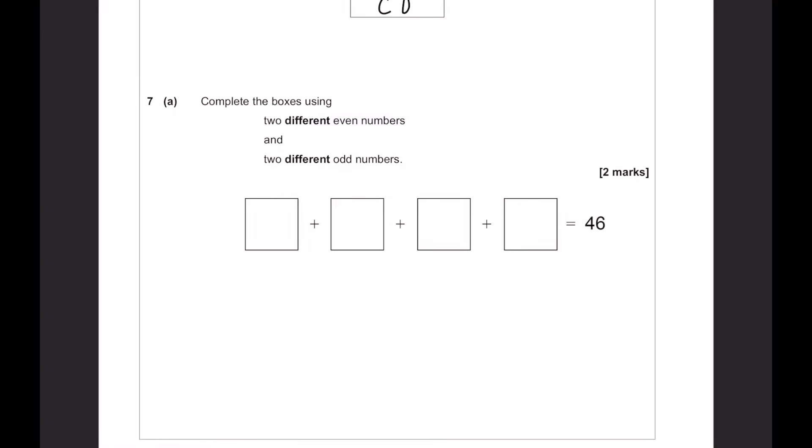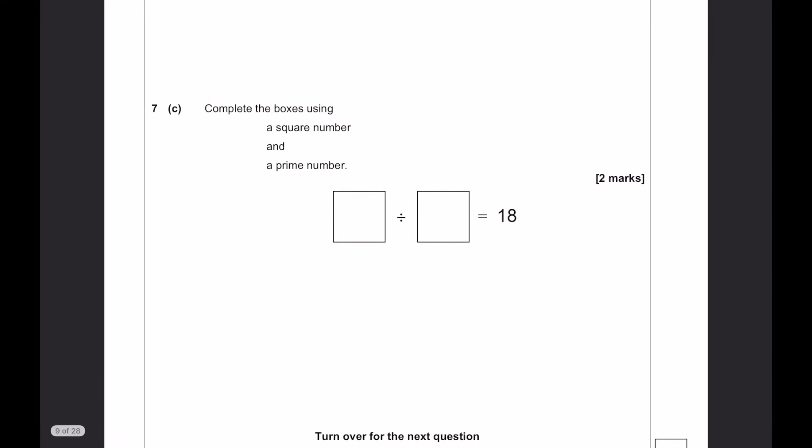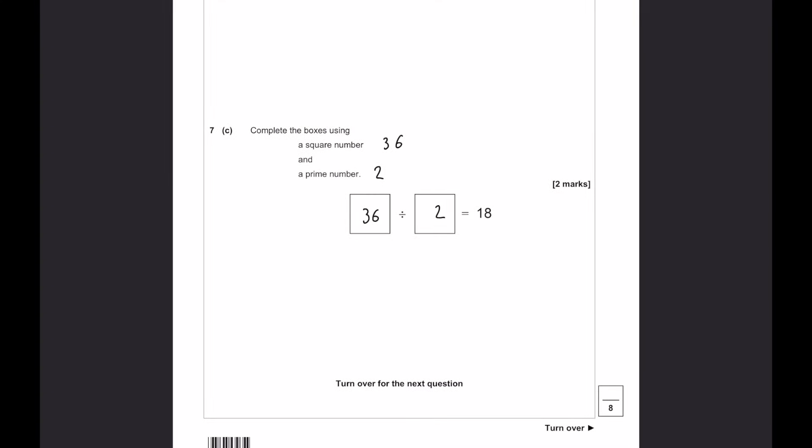Complete the boxes using 2 different even numbers and 2 different odd numbers. Let's go for 10 and 12. That's going to be 22. And then we just have to make up the remaining 24. So, let's go for 19 and 5. Now, you've got 2 different odds and 2 different evens. A factor of 12 and a factor of 40 that times together to make 30. So, that could be 6 and it could be 5. Factors, remember, are numbers that multiply together to make the 12 or the 40 in this case.